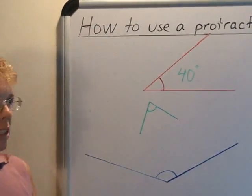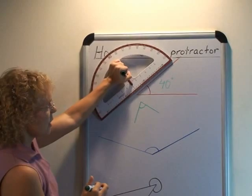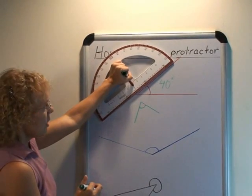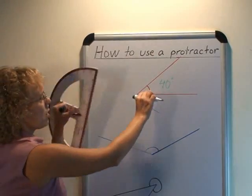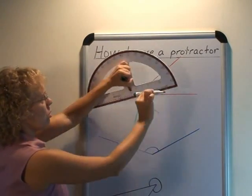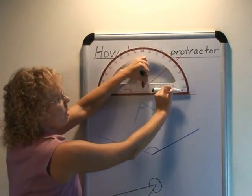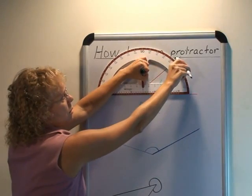Now an error that students might make is to line up this side of the angle with the baseline of the protractor. But this will not work because the angle is opening like that and you need to have the protractor so that the other side will be here.